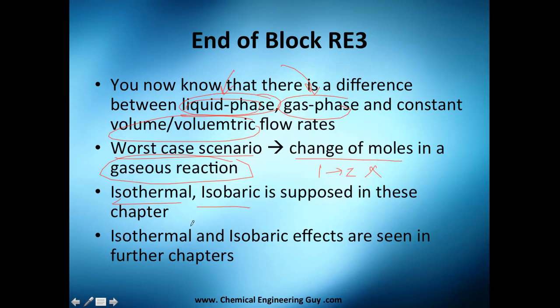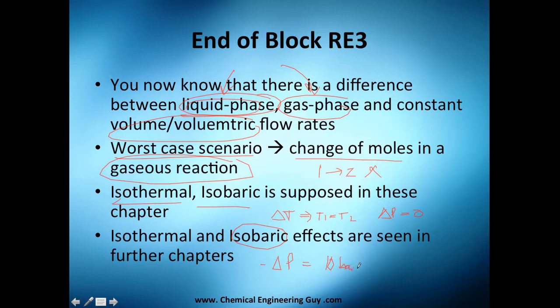Isothermal and isobaric conditions are assumed in this chapter — temperature one equals temperature two and isobaric because you have no pressure drops. If you want to see what happens when you have non-isobaric effects, for example a pressure drop of 10 bars, go to chapter 4. If you want to check out isothermal design, go to chapter 8. You will find some really cool information there, but if you're doing this step by step please don't jump to the next block.